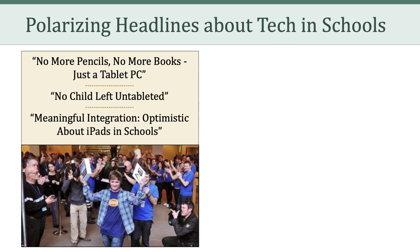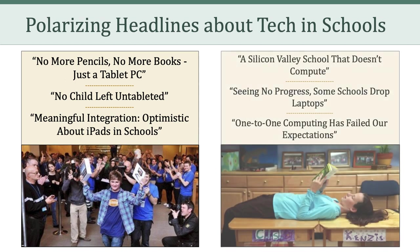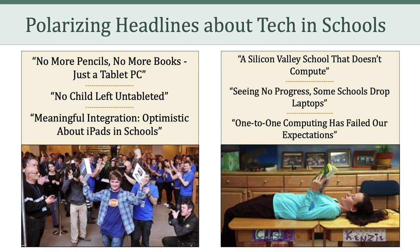Take a look at these headlines: 'No more pencils, no more books, just a tablet PC.' Or, 'No child left untableted.' Or, 'Meaningful integration: optimistic about iPads in schools.' Those are all headlines from popular press sources. Now let me show you some contrasting headlines here on the right: 'A Silicon Valley school that doesn't compute.' 'Seeing no progress, some schools drop laptops.' 'One-to-one computing has failed our expectations.' So, my question is: what's going on here? How can there be these polarizing headlines, where on one end we have very enthusiastic and optimistic headlines, whereas on the other end we have very critical or questioning headlines about educational technology?